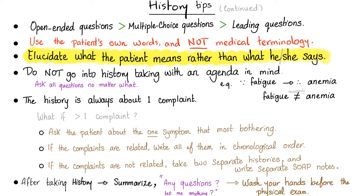The history is always focused on one complaint. If the patient lists multiple symptoms, ask: 'Out of these problems, what is bothering you the most?' and focus on that. If the other symptoms are related, write them in chronological order in the same case — for instance, mitral stenosis with atrial fibrillation and shortness of breath from pulmonary edema. If they're unrelated, write two separate SOAP notes and address the most important one first.